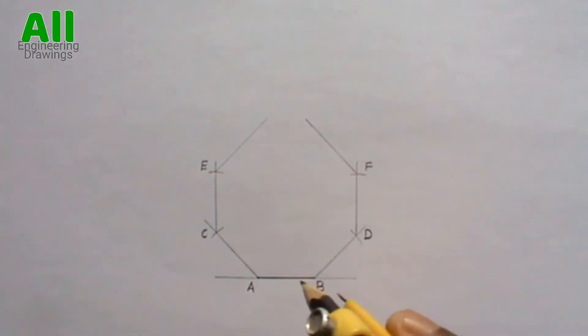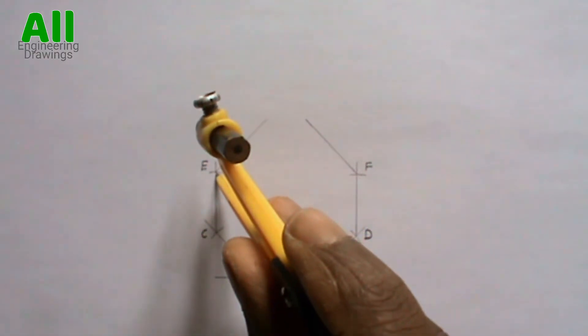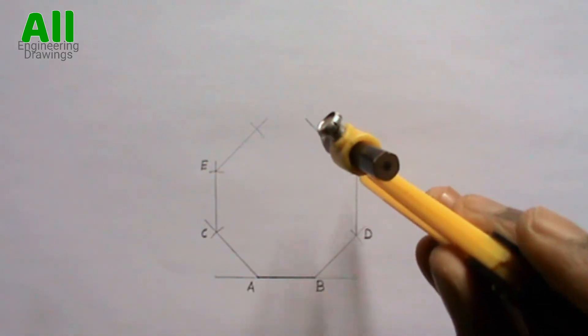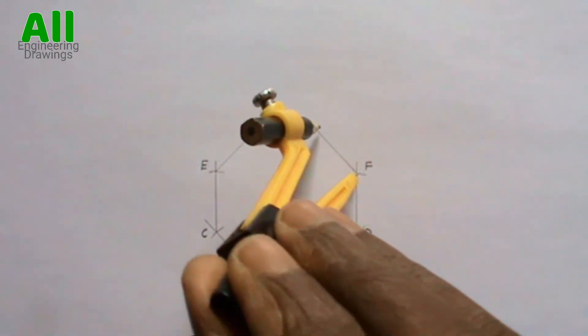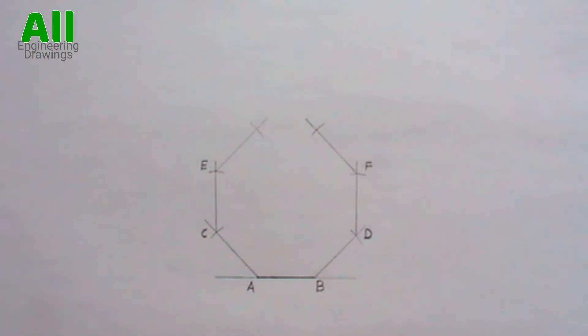Now extend your compass to the length of line AB, then cut arcs on the inclined line placing your compass on point E and F. Label the points where the arcs intersect the inclined lines.